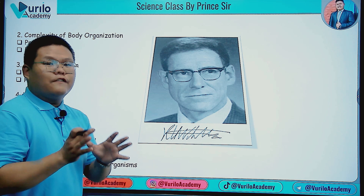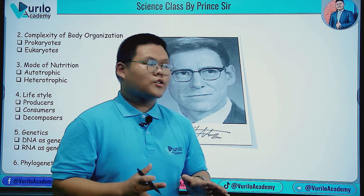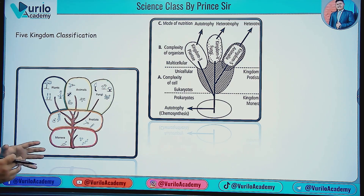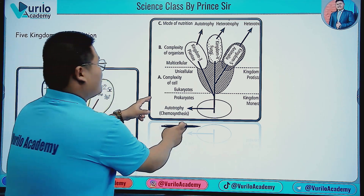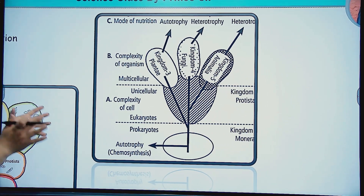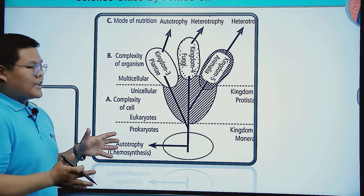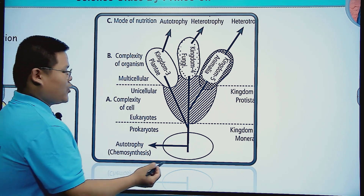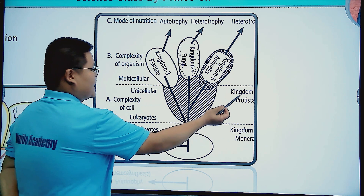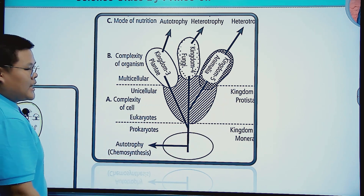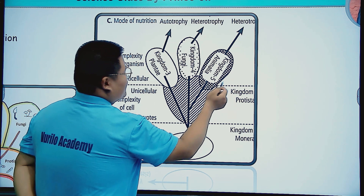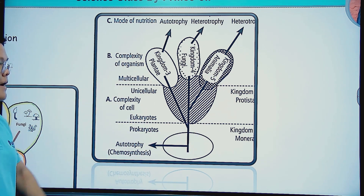On the basis of five kingdom classification, the five kingdoms are: first, Kingdom Monera; second, Kingdom Protista; third, Kingdom Plantae; fourth, Kingdom Fungi; and fifth, Kingdom Animalia.